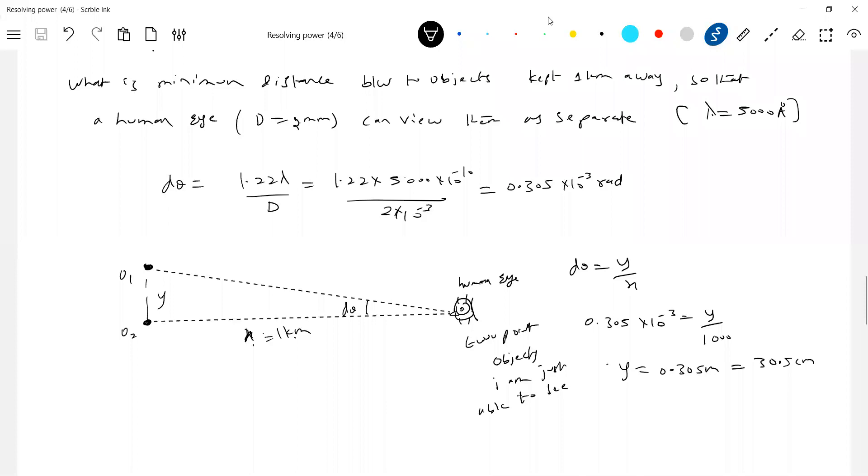What is d theta? What is D? Capital D is the diameter of the human eye. Why did 1.22 come? Because the human eye behaves like a circular slit. For the diffraction pattern, d theta equals 1.22 lambda by D, from the Rayleigh criterion. In YDSC, it was lambda by d. For a circular slit, it becomes 1.22 lambda by d, where d is the diameter of the human eye.